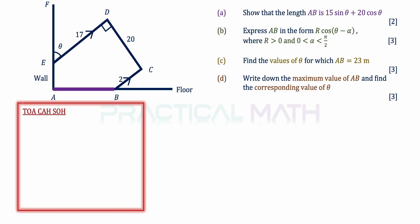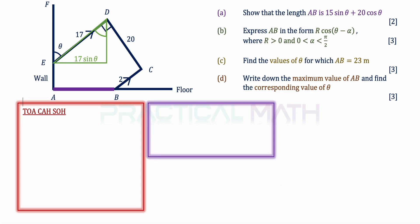In the first right angle triangle, drawn in green, if this is the angle theta, we draw a right angle triangle where one side is parallel to the wall and the other is parallel to the floor. By alternate angles, theta is the same here. The side opposite theta is the opposite, and the side parallel to the floor is opposite over hypotenuse, forming this side to be 17 sin theta.